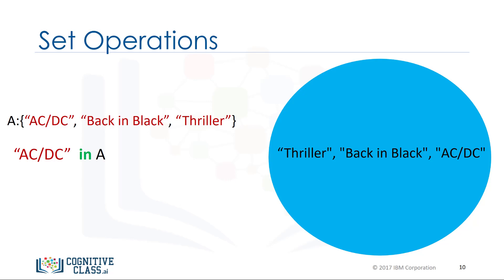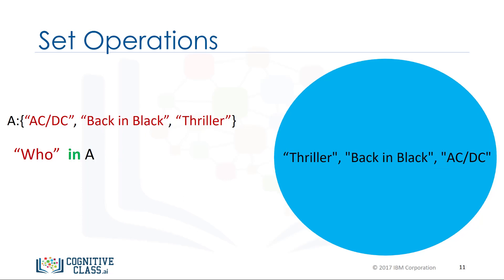We can verify if an element is in the set using the in command as follows. The command checks that the item, in this case, ACDC, is in the set. If the item is in the set, it returns true. If we look for an item that is not in the set, in this case for the item who, as the item is not in the set, we will get a false.